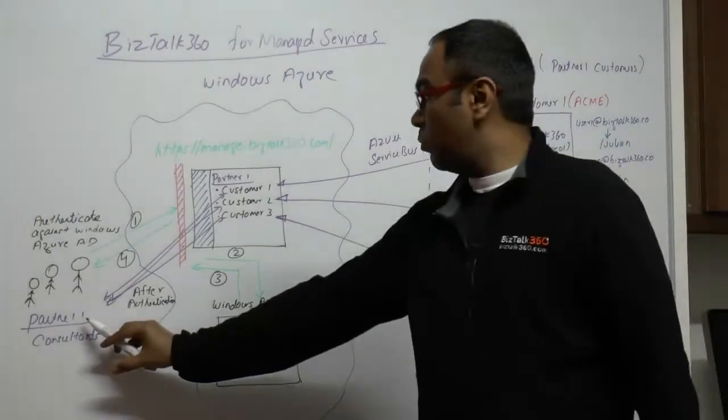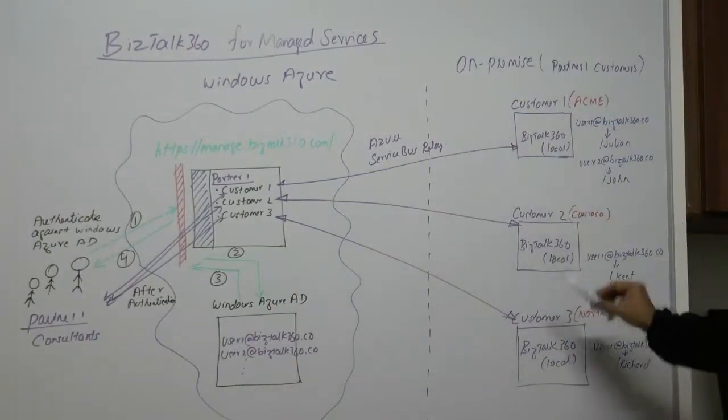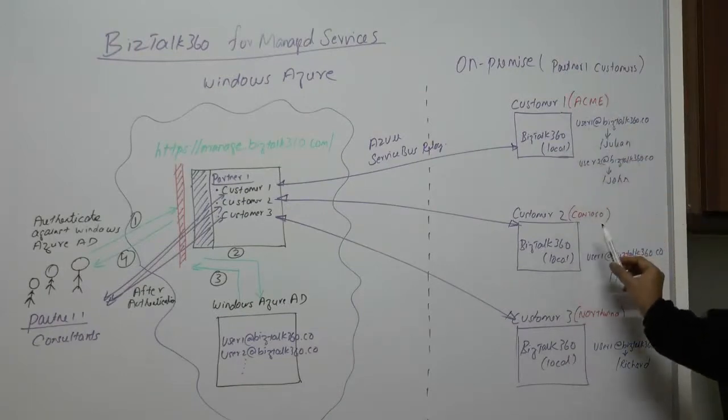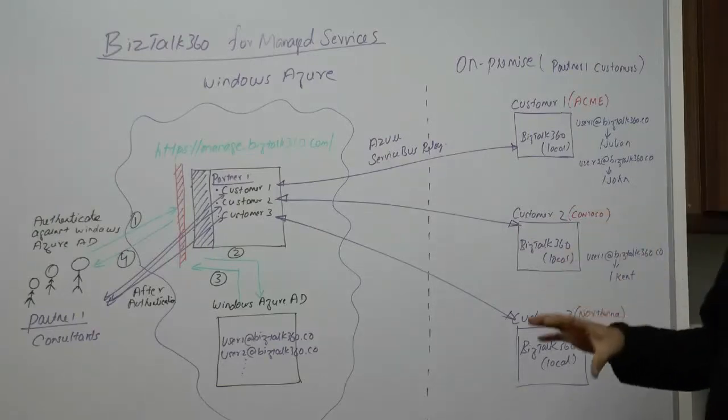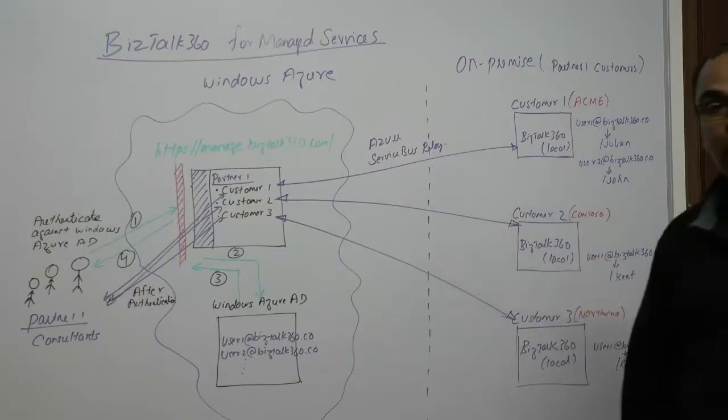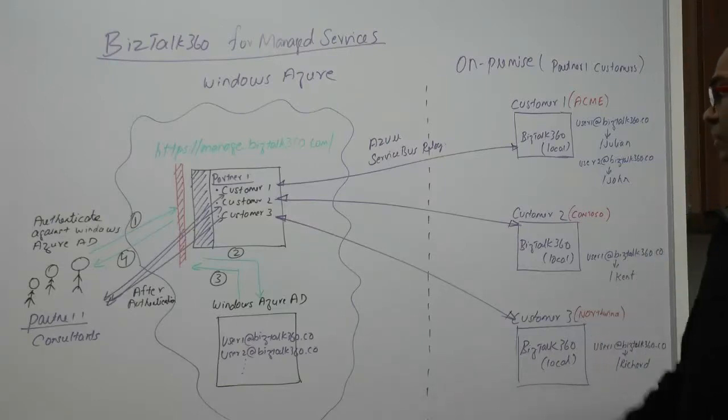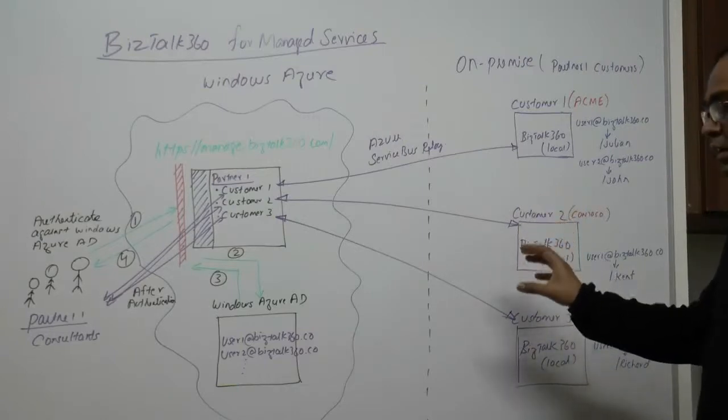I have put everything on the board so you can see how it's working. We're going to assume somebody called Partner One has three different customers: ACME is the first customer, Contoso is the second customer, and Northwind is the third customer. We are assuming all three of them are using BizTalk 360 locally, so it's present in the environment.